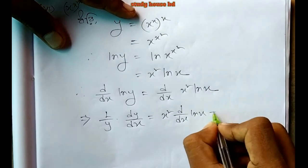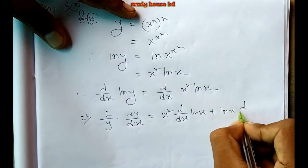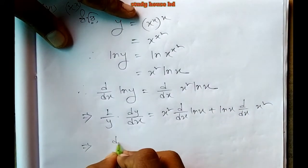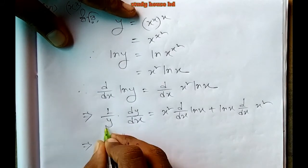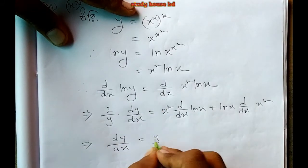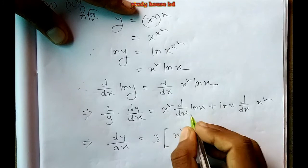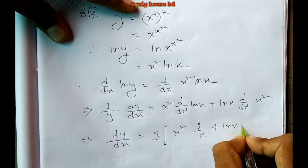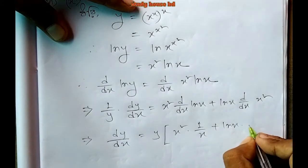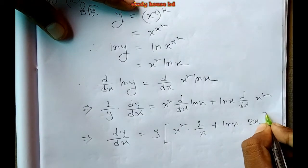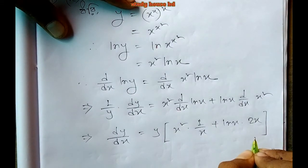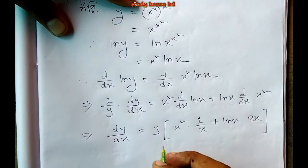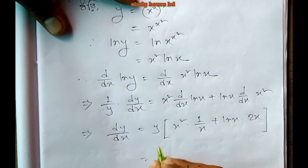Taking u equals x squared and v equals log x, we get u times d/dx of log x plus log x times d/dx of x squared. That gives x squared times 1/x plus log x times 2x, which simplifies to x plus 2x log x.